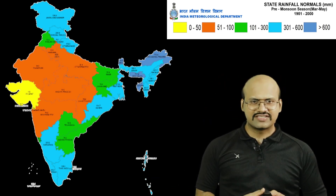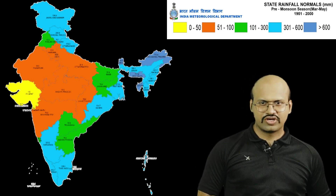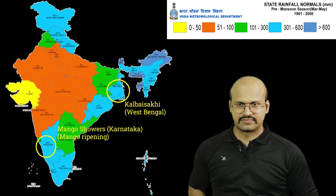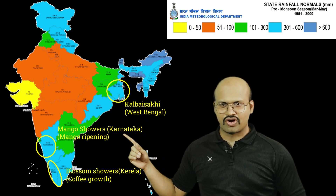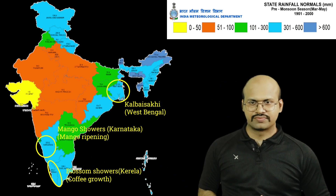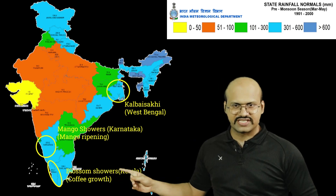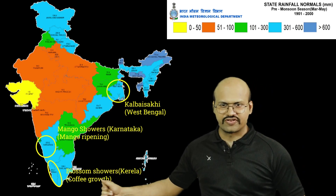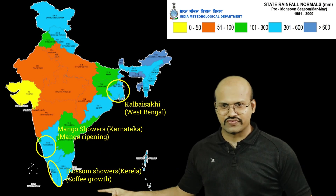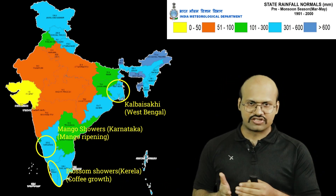In certain regions there are specific names for these pre-monsoon showers. In West Bengal they are called Kalbaisakhi. In Karnataka they are called mango showers because they help in the ripening of mango. In Kerala they are called blossom showers because they help in coffee growth. These are the different names used for pre-monsoon showers which occur between March to May.